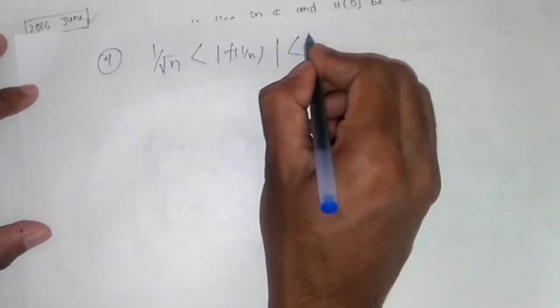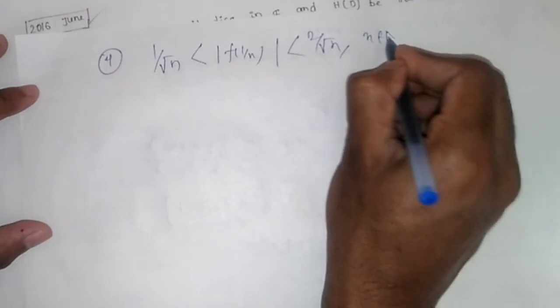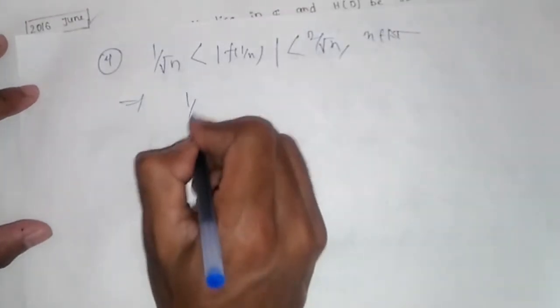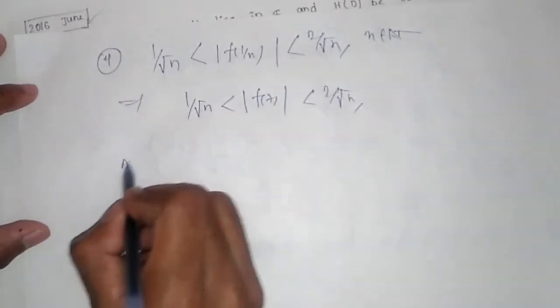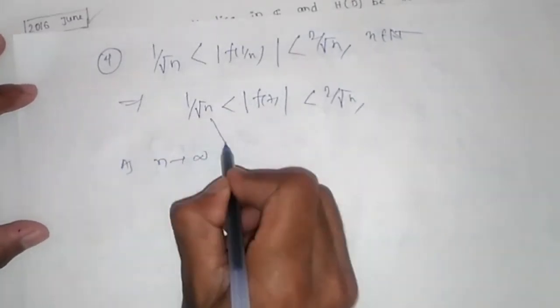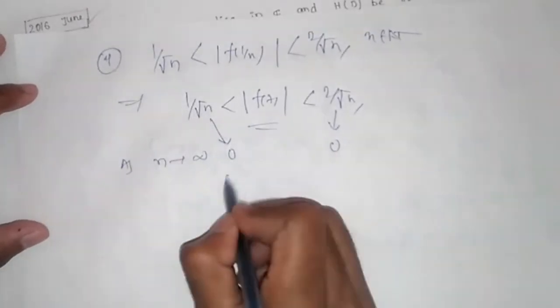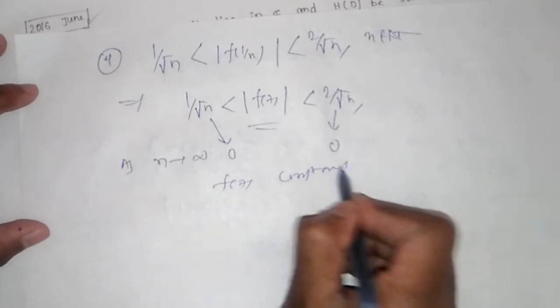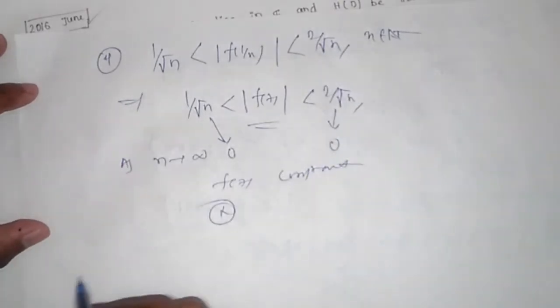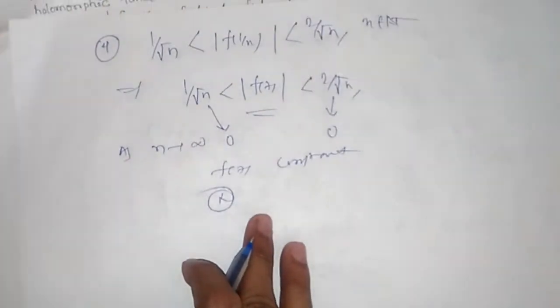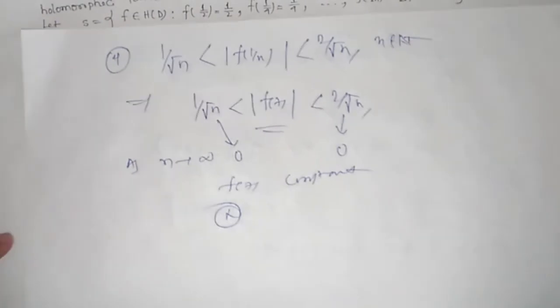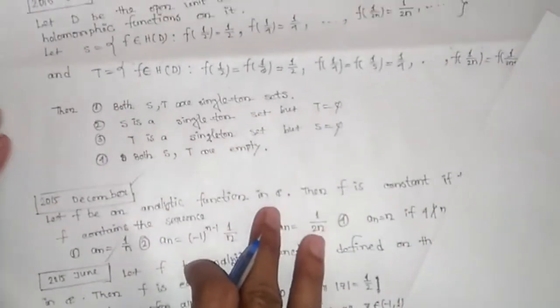Option 4: 1/√n < |f(1/√n)| < 2/√n for all n. As n tends to infinity, both bounds tend to zero, so f(z) is a constant function. Again this is not possible since f is given to be non-constant. So option 1 is the only correct answer. The 2018 June question is solved.